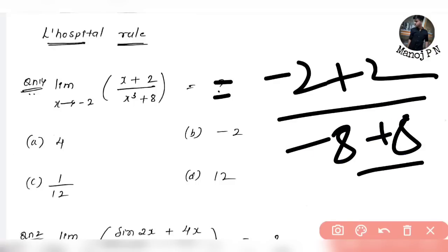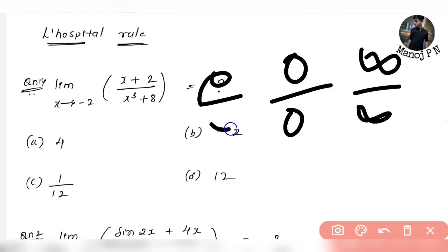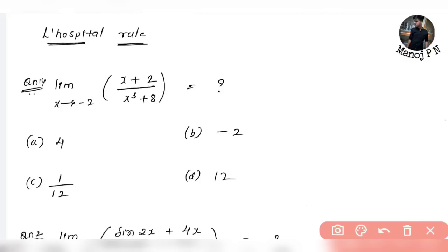So this is 0 and this is 0. When you come across 0 by 0, or infinity by infinity, or 0 by infinity, or infinity by 0 — this is the indeterminate form. So you will not be able to directly apply this limit. You will need to apply a trick — that trick is the L'Hôpital's rule.